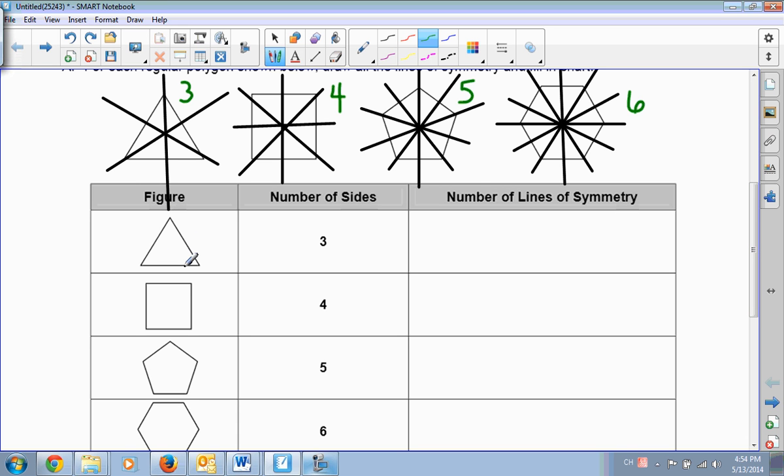With our three-sided triangle, where all the sides were congruent, it had three sides, and our number of lines of symmetry was also three. Our four-sided square, four sides, it had four lines of symmetry. Our pentagon has five sides, it had five lines of symmetry. Our hexagon has six sides, and it also has six lines of symmetry.